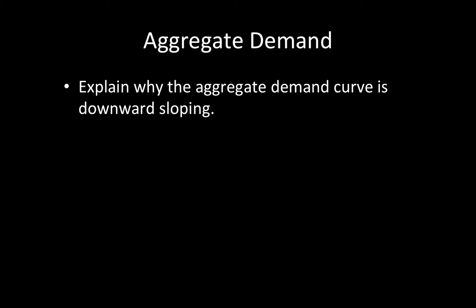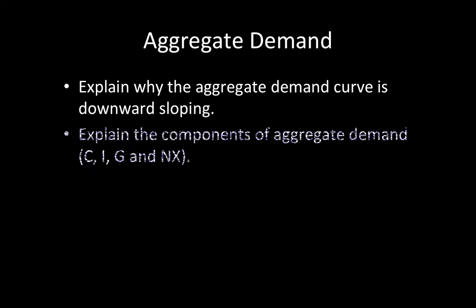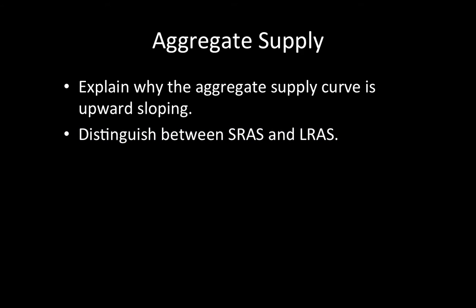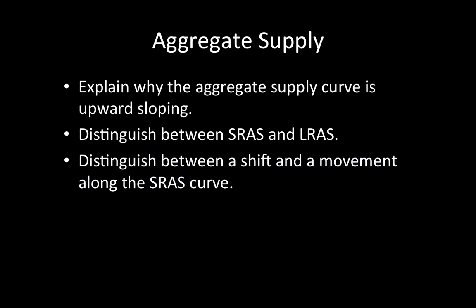For aggregate demand, you need to know why it's downward sloping, why it has the shape that it does, understand what the components are, and distinguish between a shift and a movement along the curve. For aggregate supply, the same kind of thing — explain why it's upward sloping, and distinguish between short run aggregate supply and long run aggregate supply depending on which model you study.